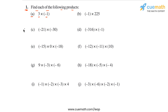Ignoring the negative signs, the magnitude of the product will be 3 into 1, or 3. And since one integer is positive and the other is negative, the sign of the product will be negative. So the product in this case will be equal to minus 3.